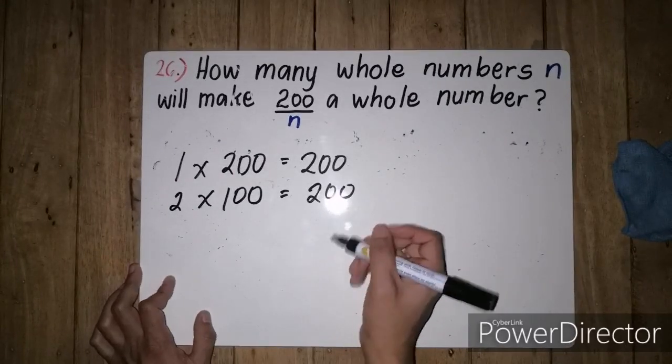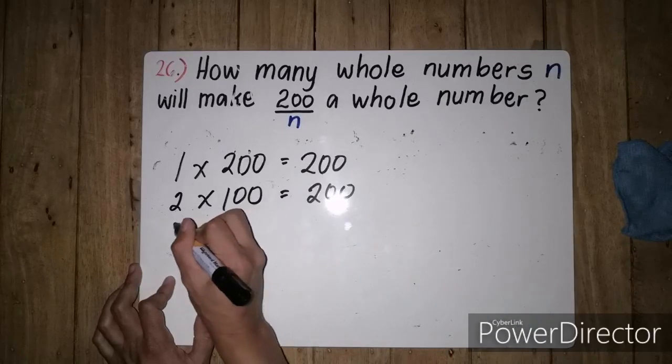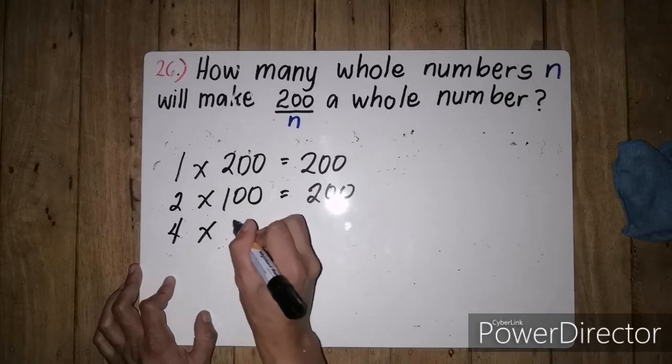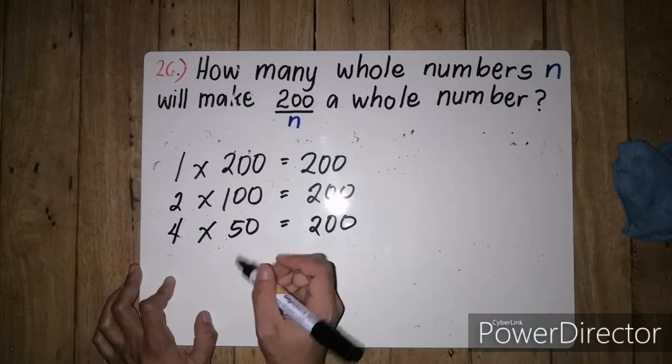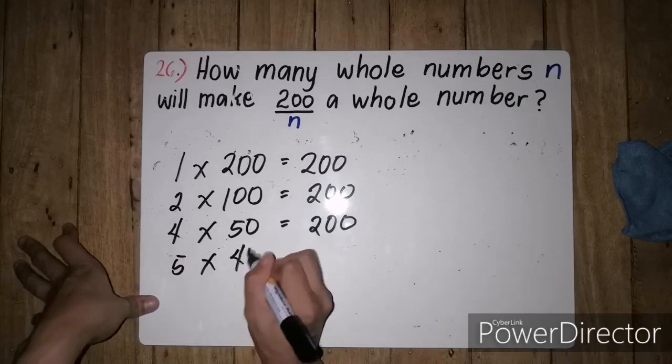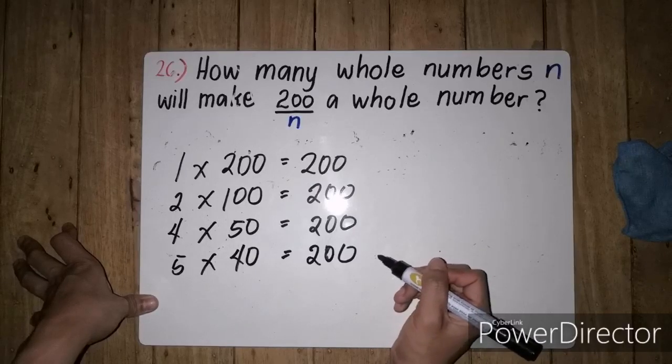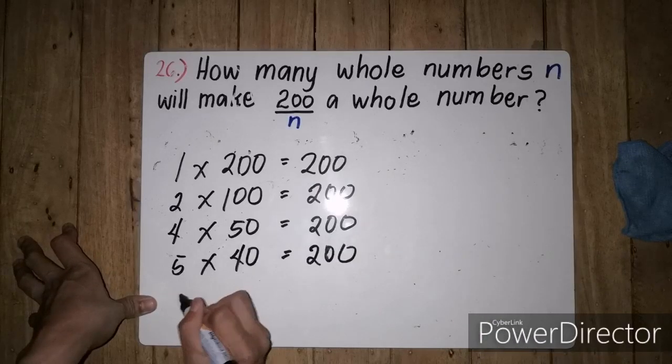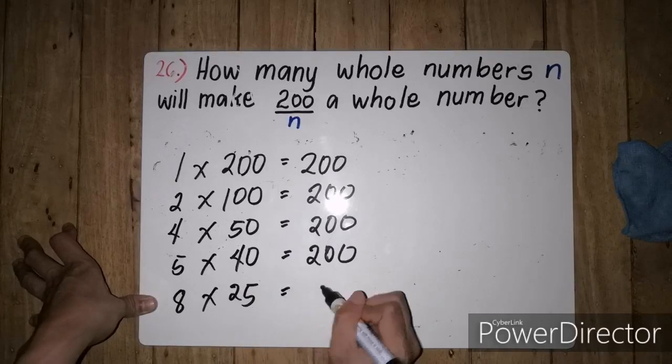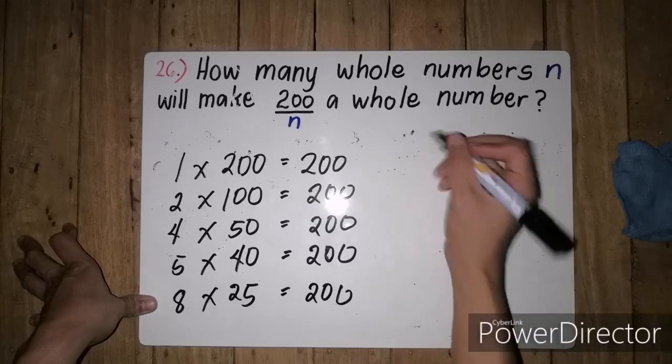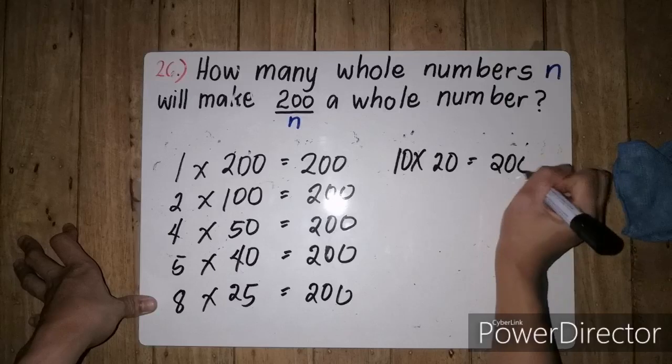Followed by 4, kasi yung 200 hindi naman siya divisible by 3. So we have 4 times 50 is equal to 200, followed by 5 times 40 is equal to 200. 6 hindi, 7 hindi din. 8 times 25 equals 200, and lastly, we have 10 times 20 which is equal to 200.